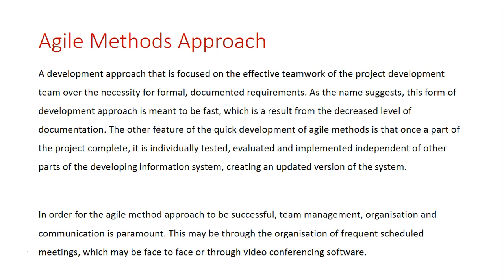One of the things that makes agile quick is that it doesn't have all this documentation — we're going straight in and working on parts of the project. Another feature of the quick development in agile methods is that once a part of the project is complete, it is immediately implemented into the actual information system. So every time a new part gets completed, the system gets updated and a new version is released, while other parts are still being worked on.